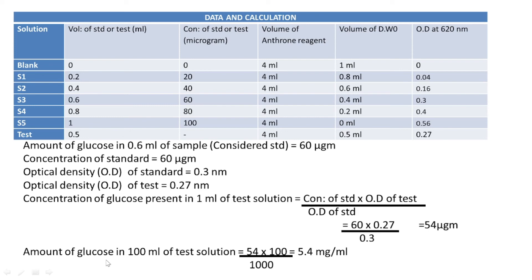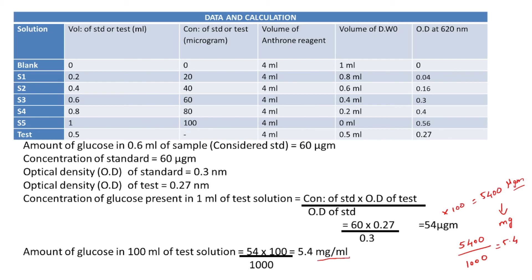To find the concentration in 100 ml of test solution, we multiply 54 by 100 to get 5400 micrograms. Converting micrograms to milligrams by dividing by 1000, we get 5.4 milligrams per 100 ml. That is the final calculated result.